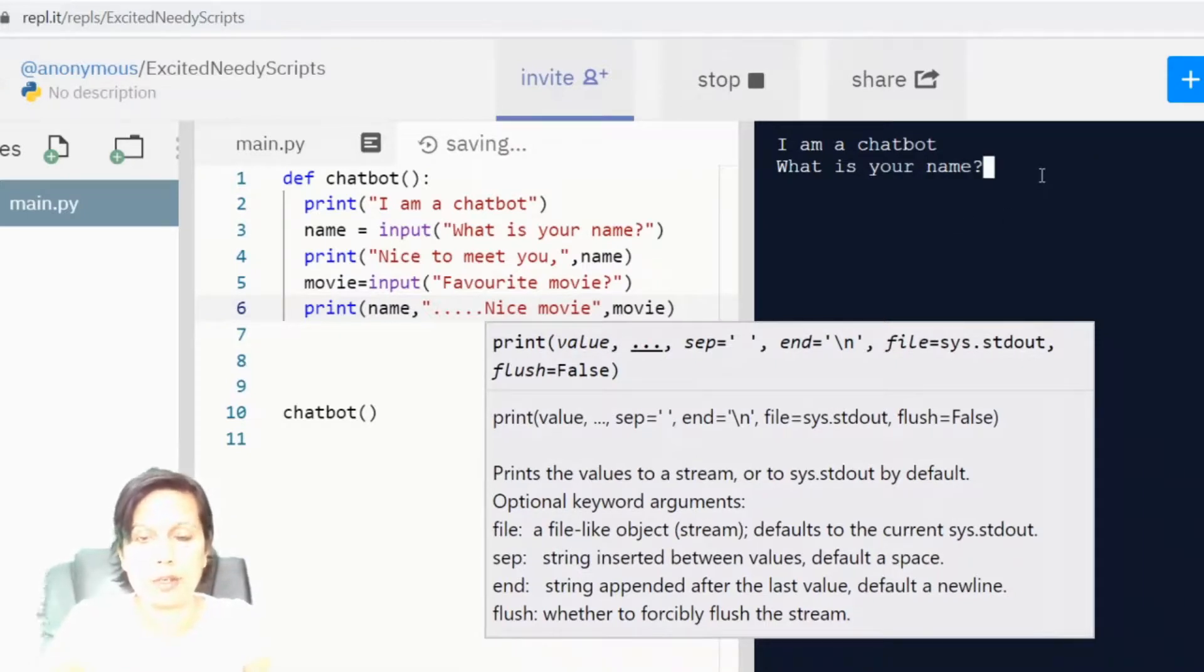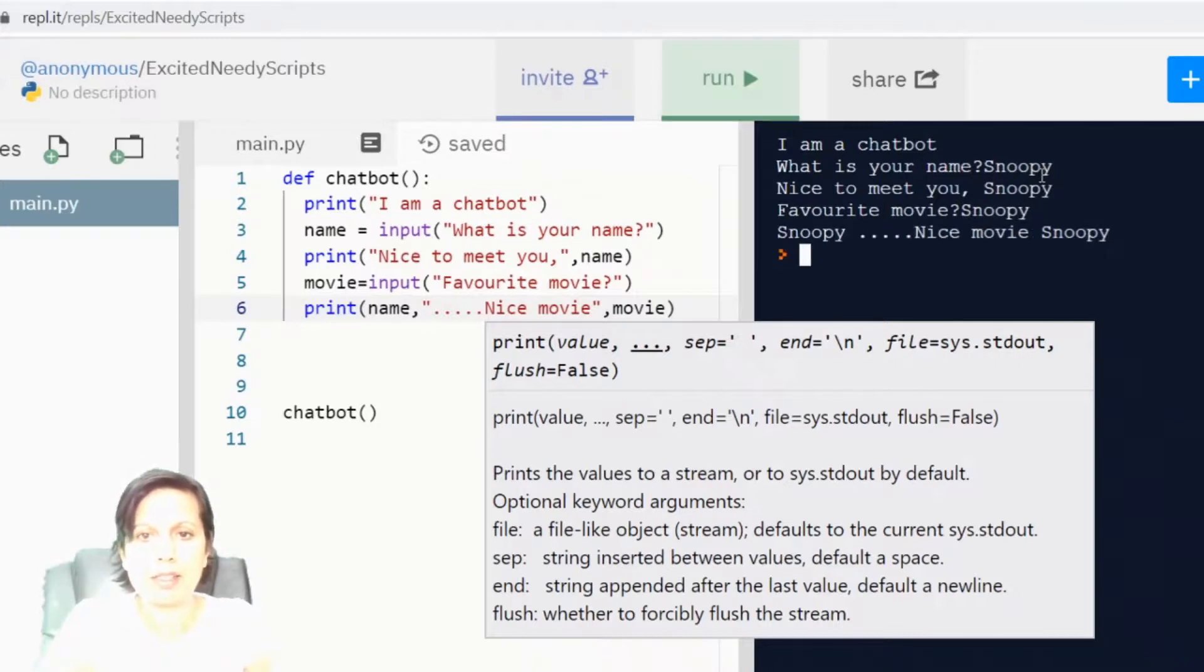And you can see how this is developing. So, it says, what's your name? I put in a name. Nice to meet you, Snoopy. Favorite movie. Snoopy. And it says, Snoopy, nice movie, Snoopy. So, it's quite interesting. And you can develop this how you want.